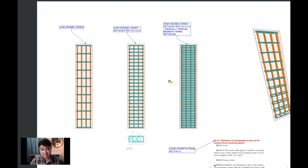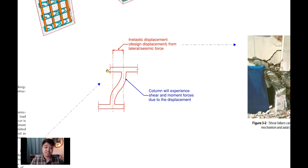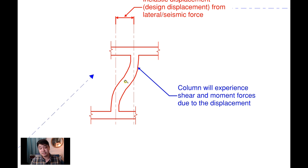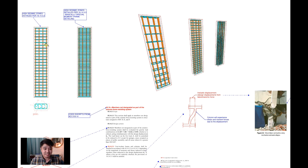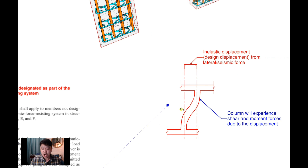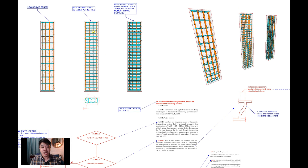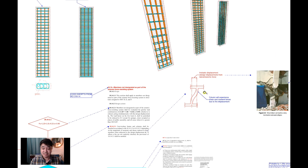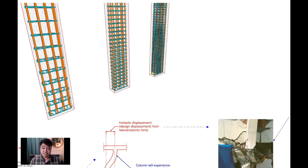If you have a special moment frame column, it's going to have a lot of hoop spacing, basically spaced at around two and a half inches as you can see here. So what's the difference between low seismic zones and high seismic zones? Why are there so many hoops and stirrups in high seismic zones? One of the main concepts is ductility. If you have an earthquake your floors are going to displace, and your columns are going to displace with them. The more your columns can displace without breaking — that's what we call ductility. The more hoops you have, the more ductile the column and the more it can deform laterally.